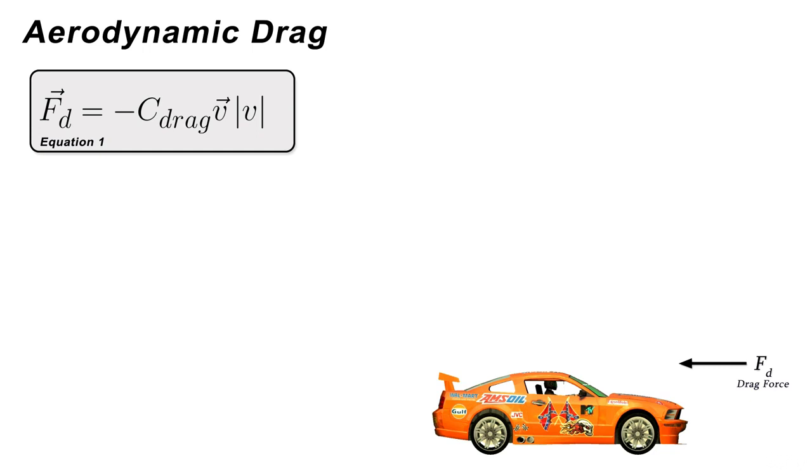Now depending on how realistic you want to get, you can just plug in any numbers you like for that C_drag constant in equation one. You can use whatever feels right for your game, but of course that may require a fair bit of play testing.